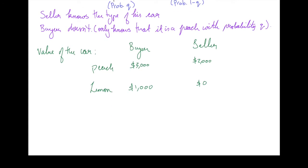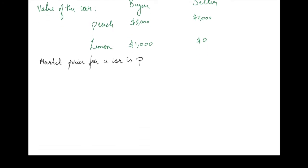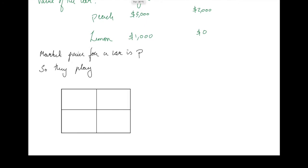There's a market price for a car, which is P. If they transact, they would transact at price P. The buyer can either decide to engage in the transaction or not, and so can the seller — either transact or not transact.